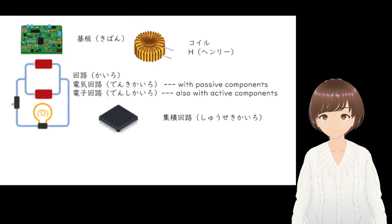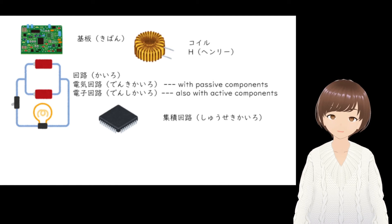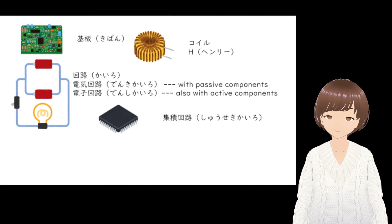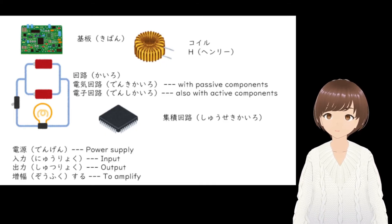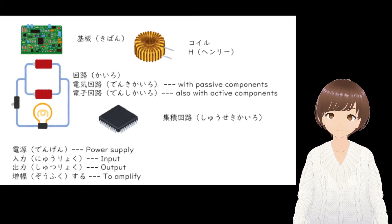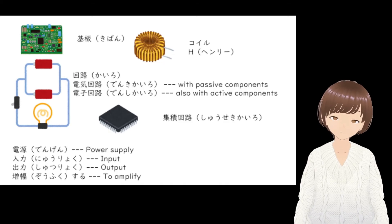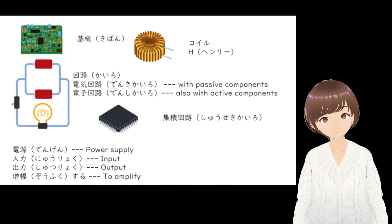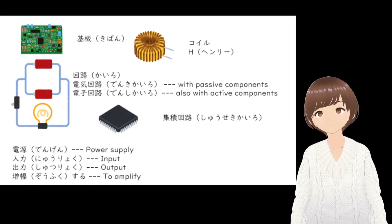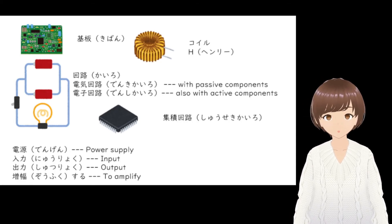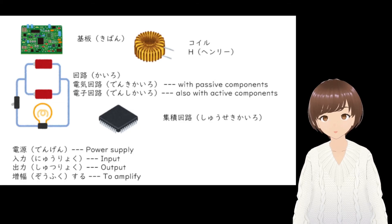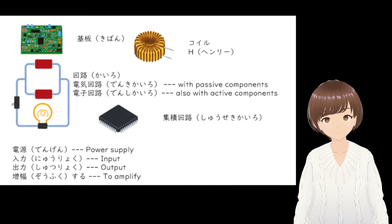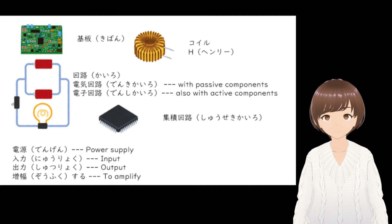IC can be simply referred to as IC as well, but it's also called shuseki kairo. Some other commonly used words: denien means power supply. Nyuuryoku means input — to use as a verb, you can say nyuuryoku suru. Shuuryoku means output — to use as a verb, you can say shuuryoku suru.